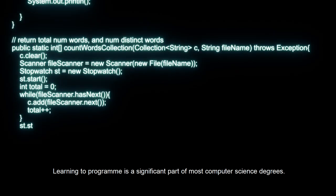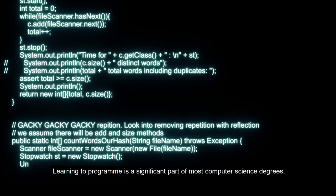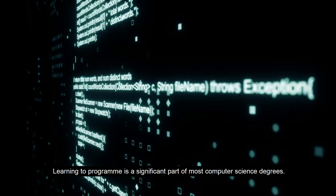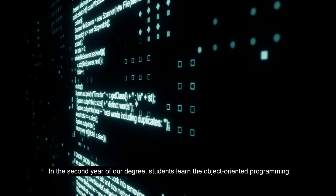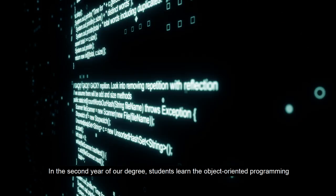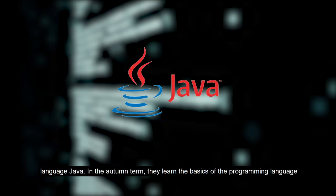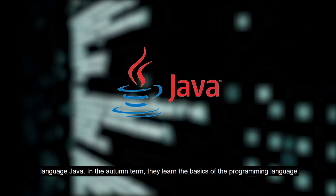Learning to program is a significant part of most computer science degrees. In the second year of our degree, students learn the object-oriented programming language Java.